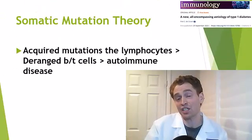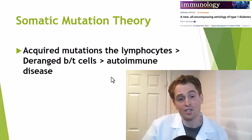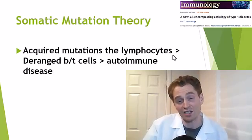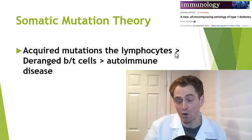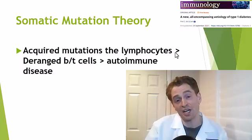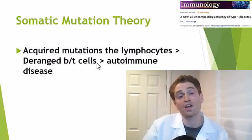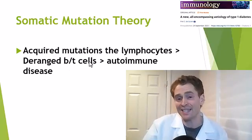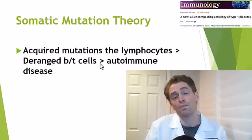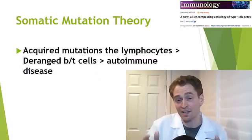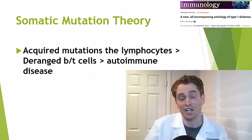Dr. DeGroon believes this could be happening with autoimmune diseases — what I'll call the somatic mutation theory of autoimmune disease. You could have acquired mutations in the lymphocytes, the B and T cells — not mutations you were born with. Those changes, in addition to germline mutations and perhaps other factors, could lead to derangement of the B and T lymphocytes such that they attack self-antigens, leading to different autoimmune diseases depending on the specific targets and what tissues they're present in.